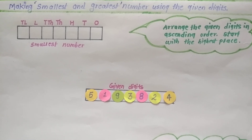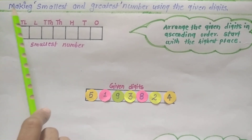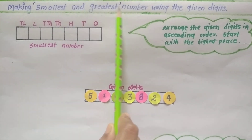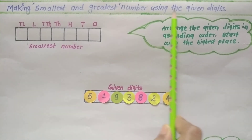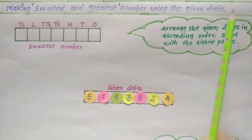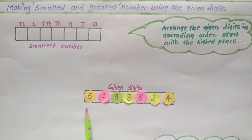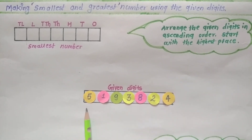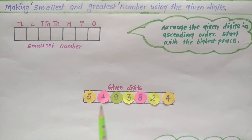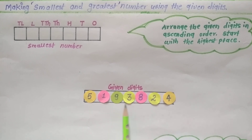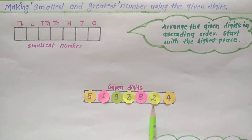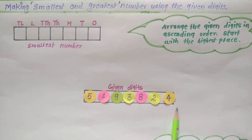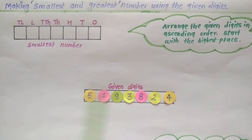Students, today we learn the topic of forming the smallest and greatest number using the given digits. Here I have taken some digits and the digits are 5, 1, 9, 3, 8, 2 and 4. You can take any digits.